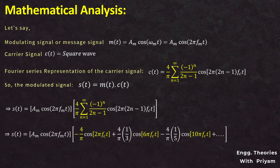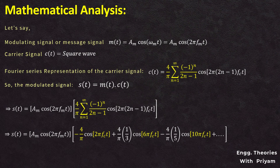Expanding, s(t) = Am·cos(2π·fm·t) · [(4/π)cos(2π·fc·t) − (4/3π)cos(6π·fc·t) + (4/5π)cos(10π·fc·t) − ...]. From this equation, there is no output at the carrier frequency fc itself, confirming the carrier is entirely eliminated. The remaining terms are harmonics of the carrier signal. Multiplying by the message signal Am·cos(2π·fm·t) produces the DSBSC modulated signal at different harmonics, confirming that the ring modulator successfully generates DSBSC.